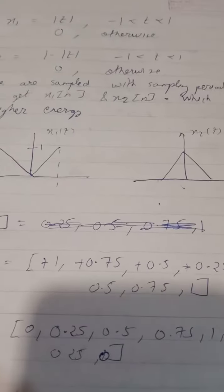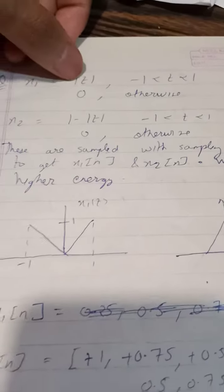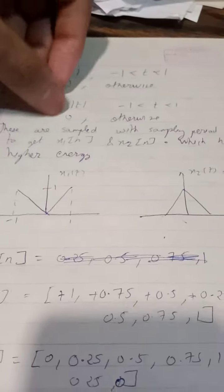In this video we have to calculate the energy of a discrete signal. First of all we are given the signal x1 is mod of t from minus t to 1 and x2 is 1 minus mod of t.